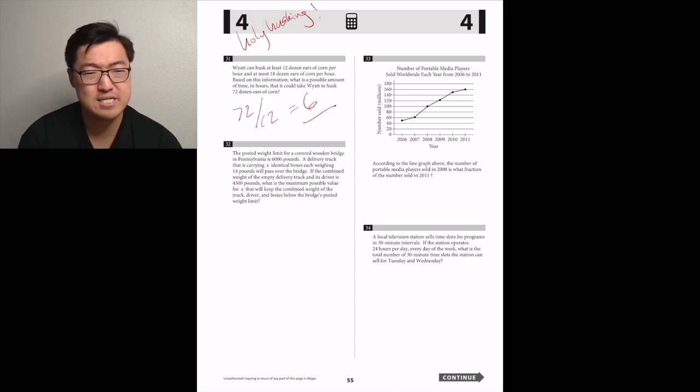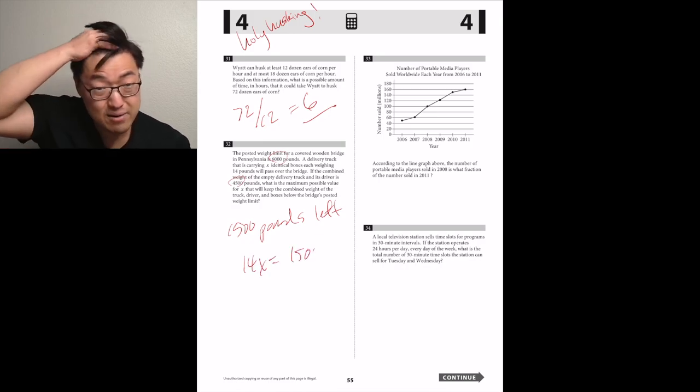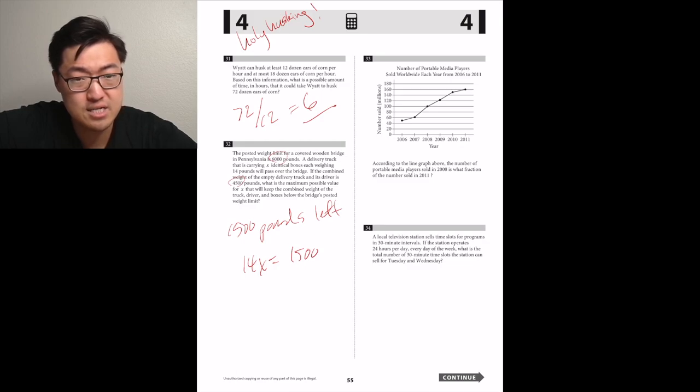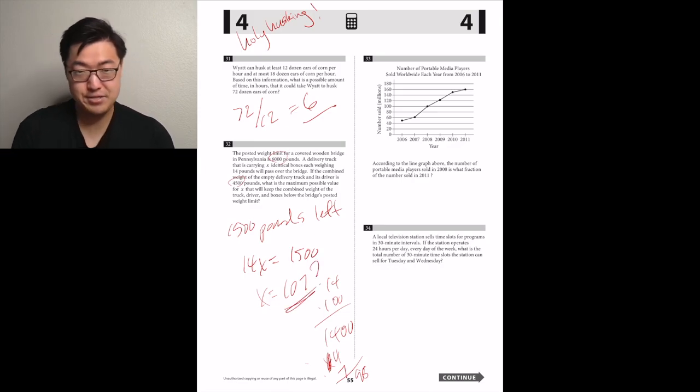The posted weight limit for a covered wooden bridge in Pennsylvania is 6,000 pounds. A delivery truck that's carrying X identical boxes, each weighing 14 pounds, will pass over the bridge. If the combined weight of the empty delivery truck and its driver is 4,500 pounds, what's the maximum possible value for X that will keep the combined weight of the truck driver and boxes below the bridge's posted weight limit? So then it weighed 6,000 in the beginning. It was 4,500. So there's 1,500 pounds that the boxes have to account for. So whatever 1,500 divided by 14 is. So 14 times 100 would be like 1,400 and then I have to account for the extra 100. So what's 100 divided by 14? Like six, seven? Seven points? So I think it's like 107, but beware. Use the calculator.